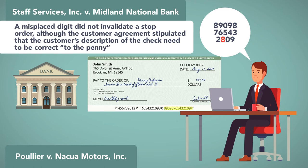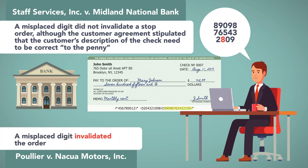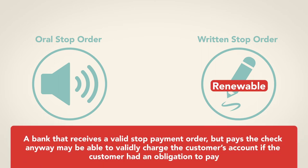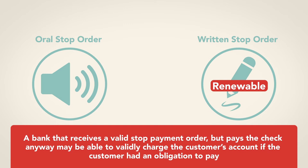In one case, a misplaced digit did not invalidate a stop order, although the customer agreement stipulated that the customer's description of the check needed to be correct to the penny. In another case, a misplaced digit invalidated the order. An oral stop order is valid for 14 days, and a written stop order is valid for six months; written stop orders are renewable. A bank that receives a valid stop payment order but pays the check anyway may be able to validly charge the customer's account if the customer has an obligation to pay.